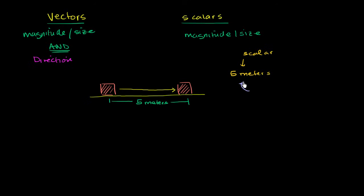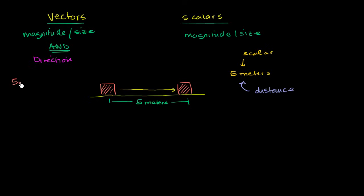How far of a distance has something traveled? So this is distance. We could say that this brick, because of my picking it up and moving it, has moved a distance of five meters. But if someone just told you it moved a distance of five meters, you wouldn't know if it moved to the right five meters, to the left five meters, up or down, or in or out. You just know it moved five meters.